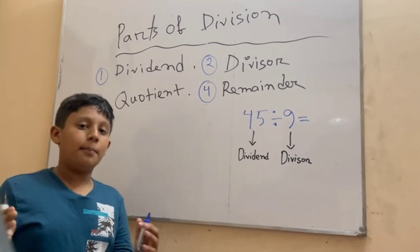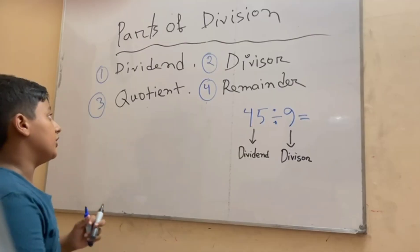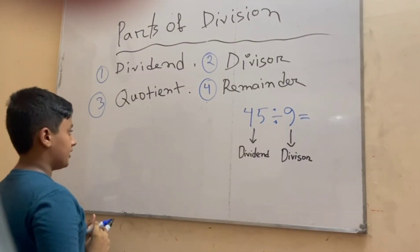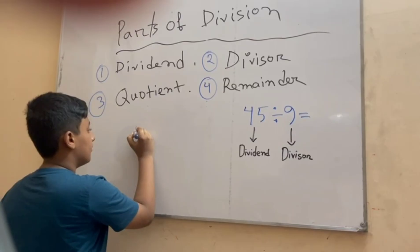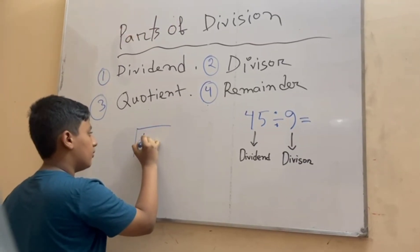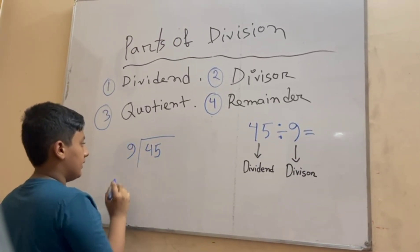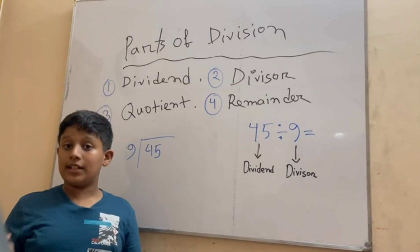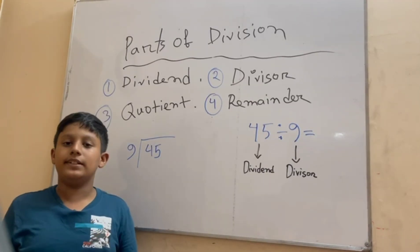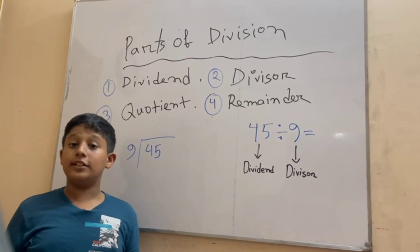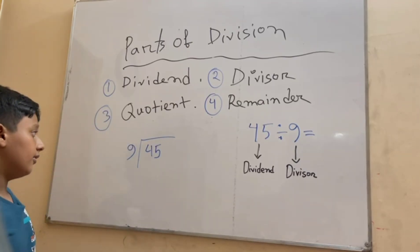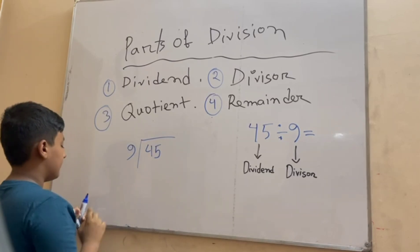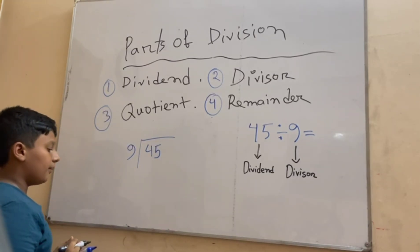Now let's do the working so that we can get the other two parts of a division: quotient and remainder. Let's start. It was 45 divided by 9. In every division you have to know the times table from 1 to 15, or else you cannot do the division.